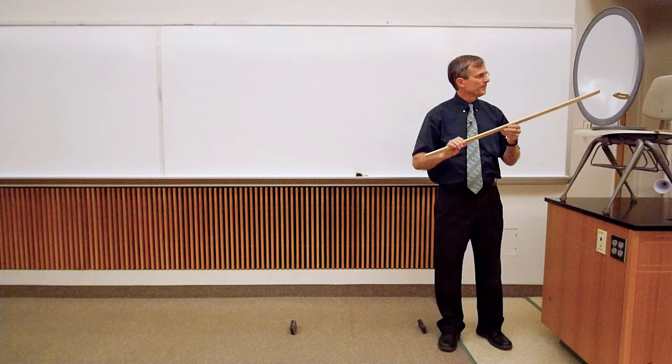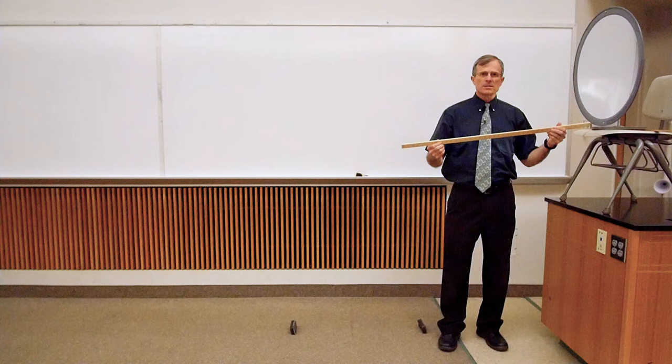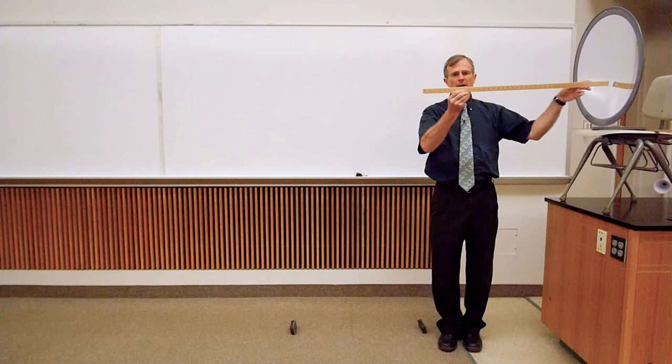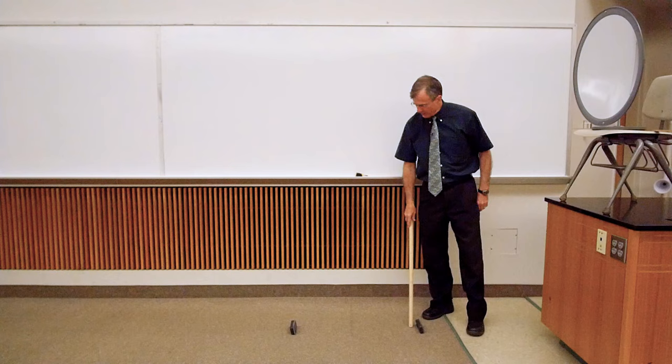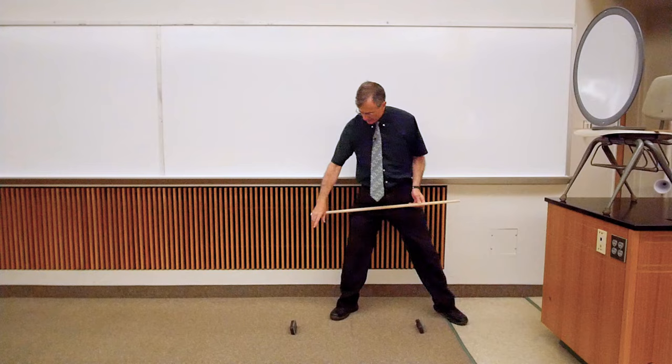As we've discussed, the focal point is half of the radius of curvature. So the radius of curvature must be 160 centimeters, about out to here. I've placed these two erasers, here and here, at the approximate focal length and radius of curvature, which is twice the focal length, for reference.